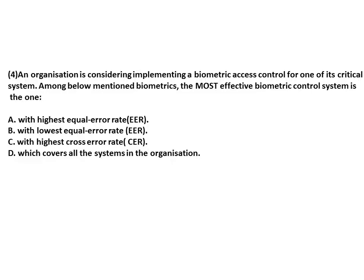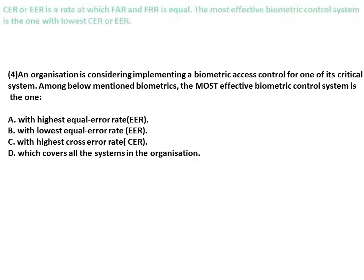The most effective biometric control system is the one with the lowest CER or EER. CER or EER is the rate at which FAR and FRR are equal. The most effective biometric control system has the lowest Cross Error Rate or Equal Error Rate.